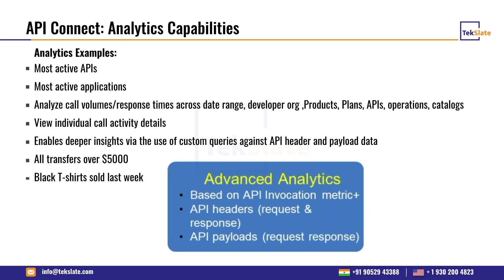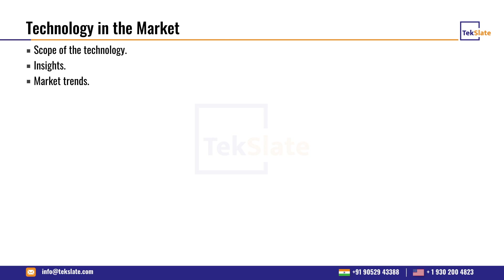In the analytics dashboard you can see the most active APIs, most active applications, TPS for each API, and HTTP response code breakdowns — how many 200s, 404s, 500s. This predefined default dashboard requires no additional configuration.